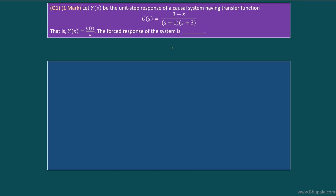Hello friends, in this video we will discuss a problem given in GATE 2019 in ECE branch. The question goes like this: G(s) is the transfer function of a causal system which is given here, and the output of the system for a unit step input is given to be...